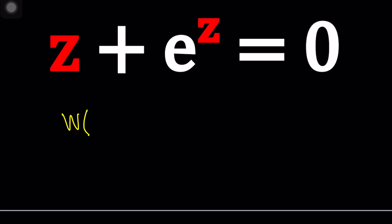And W of T to the T is equal to T. In other words, the inverse of W is T to the T. So W is the inverse function for this function. You can kind of replace them.